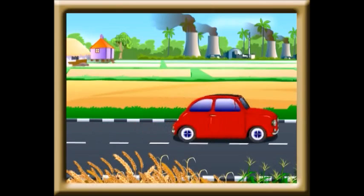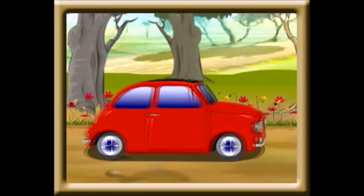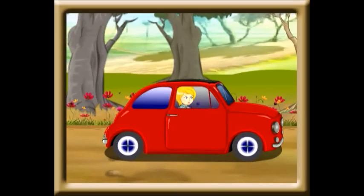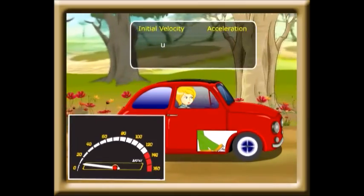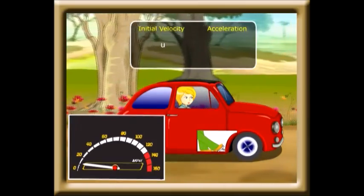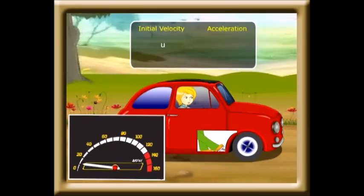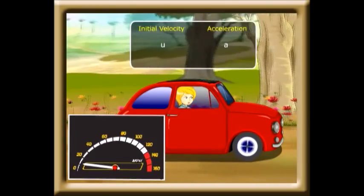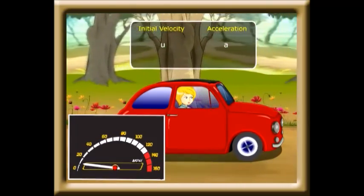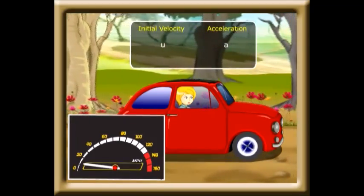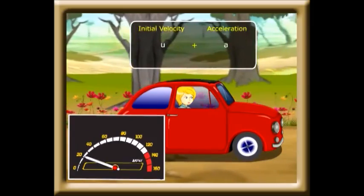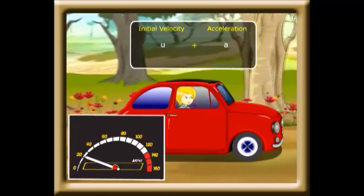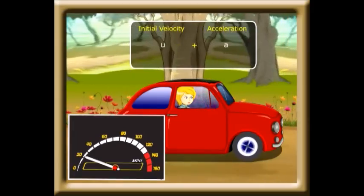When we start a car, our initial velocity is actually quite low — let that be u meters per second. As we press hard on the accelerator, we drive with uniform acceleration, let's say a. We pick up speed; the velocity keeps on increasing. So after one second, the velocity is u plus a. After two seconds, the velocity is u plus 2a.